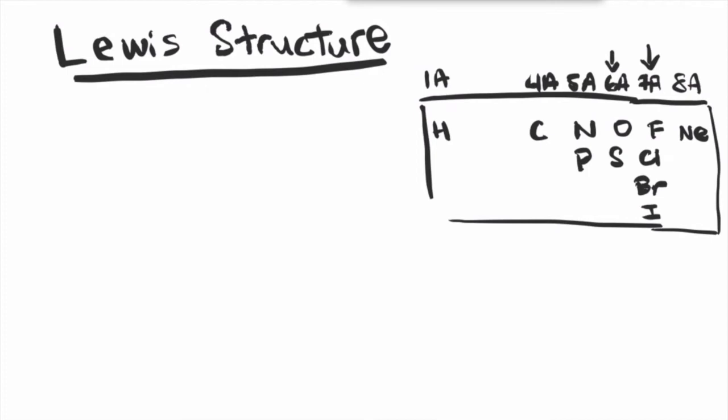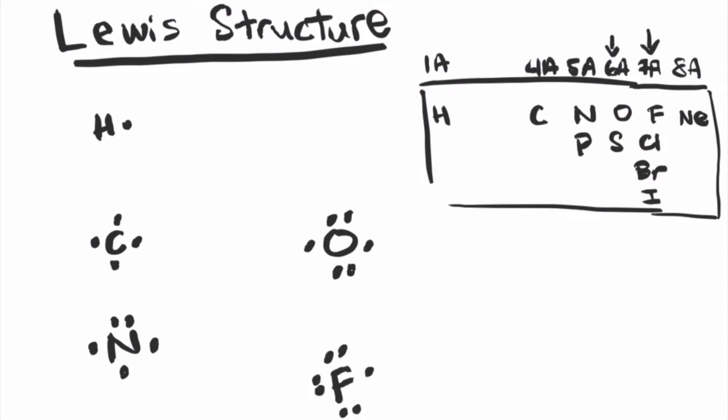Going back to Lewis structure, we can represent the valence electrons on these atoms as a single dot. For hydrogen, we would signify it as an H with a dot next to it. For carbon, it has four. It doesn't matter where you put these dots as long as you have four dots around carbon. For nitrogen, it would be five dots. For oxygen, it would be six dots. And for fluorine, seven dots. So these are some examples of the Lewis dot structures for the individual atoms.